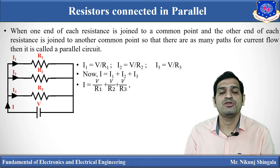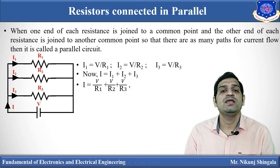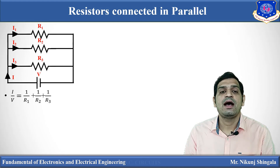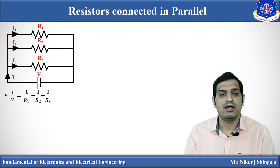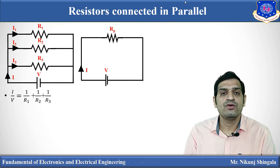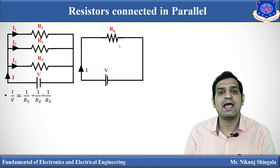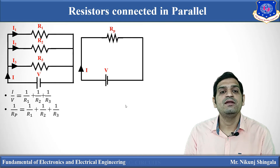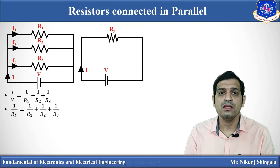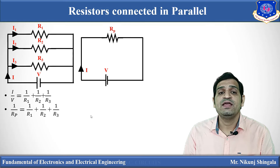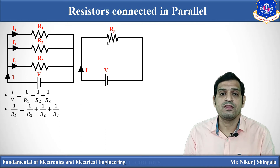Total current I equals I1 plus I2 plus I3. Substituting: I equals V/R1 plus V/R2 plus V/R3. Taking V common: I divided by V equals 1/R1 plus 1/R2 plus 1/R3. Drawing the equivalent circuit with equivalent resistance Rp, we get 1/Rp equals 1/R1 plus 1/R2 plus 1/R3. The reciprocal of equivalent resistance for parallel-connected resistors equals the sum of the reciprocals of individual resistances.